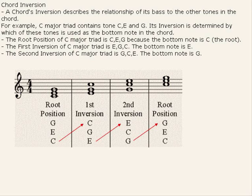Chord Inversion. The chord's inversion describes the relationship of its bass to the other tones in the chord. For example, C major triad contains tones C, E, and G. Its inversion is determined by which of these tones is used as the bottom note in the chord.